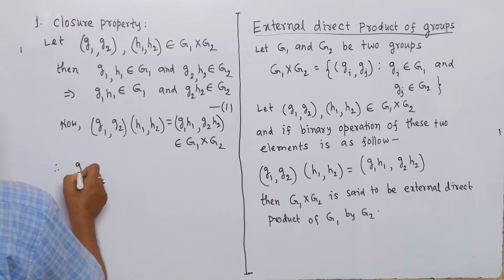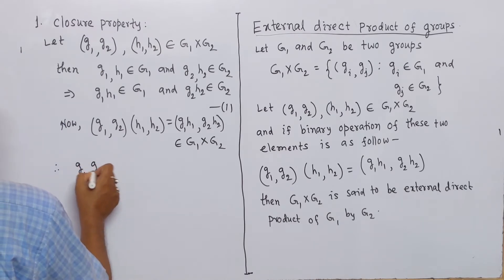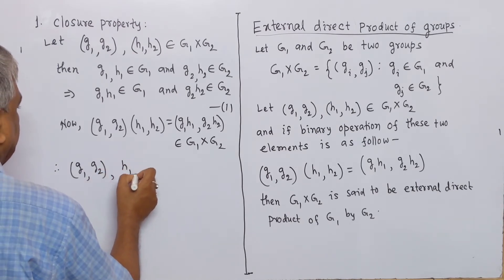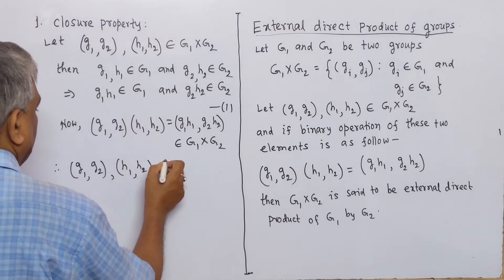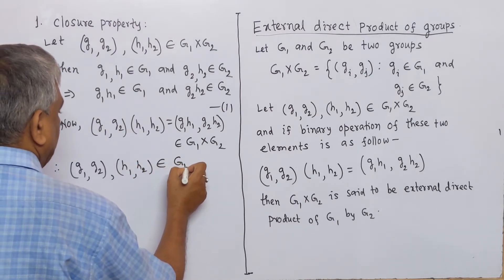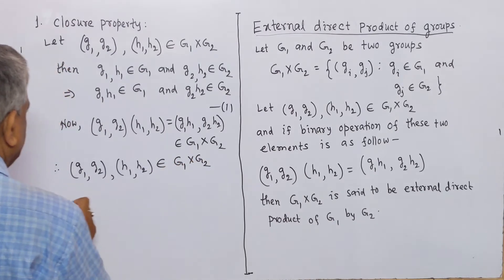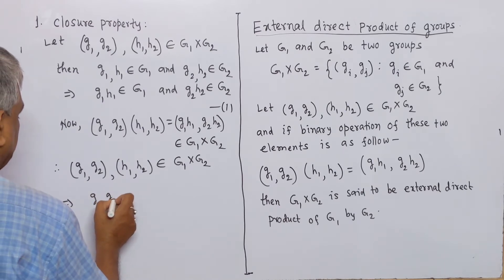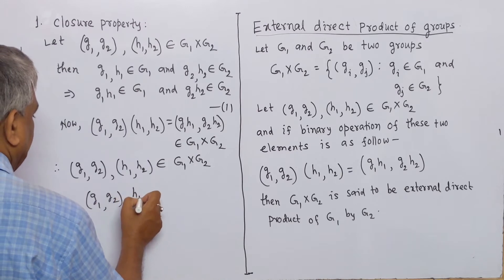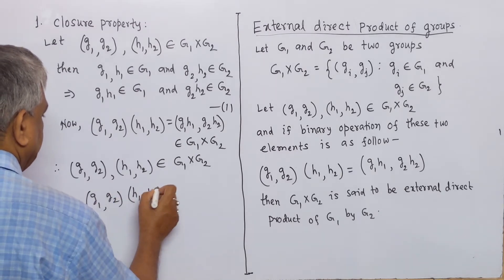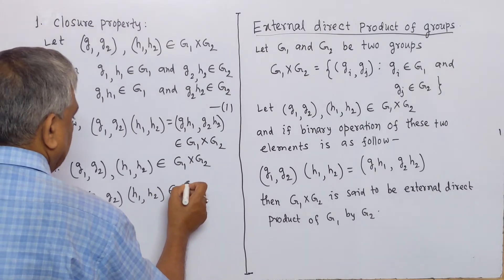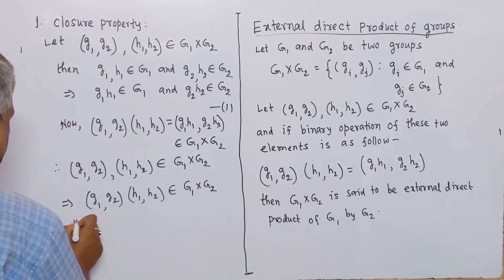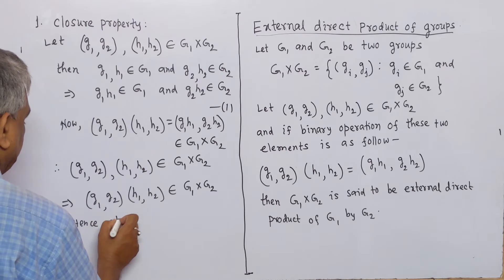Therefore, (g1, g2) and (h1, h2) belonging to the direct product G1 × G2 implies that their product (g1, g2) · (h1, h2) also belongs to the direct product G1 × G2. Hence, the closure property holds.